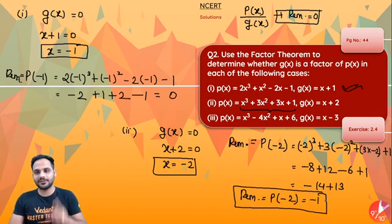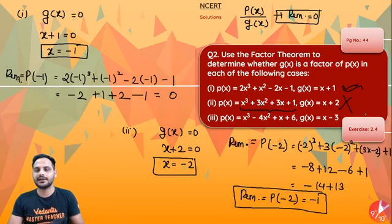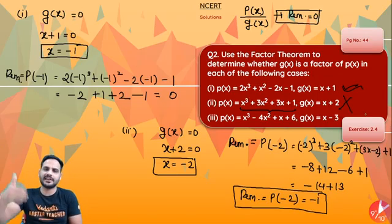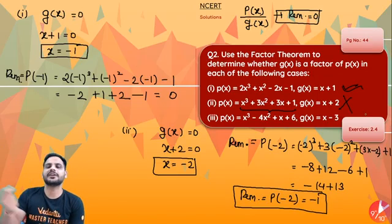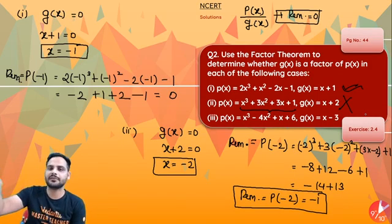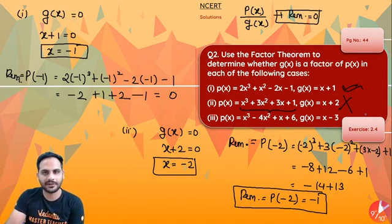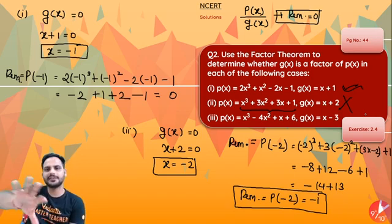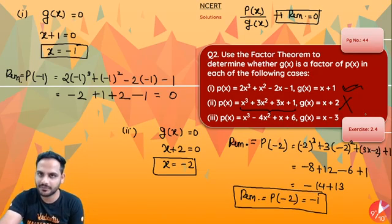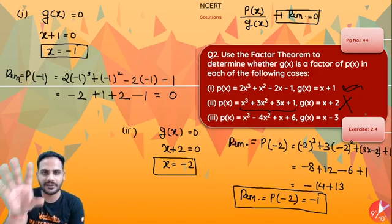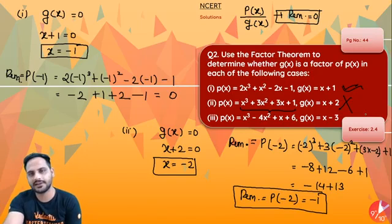Since the remainder is not equal to 0, g(x) = x + 2 is not a factor of p(x) in the second case. To summarize: using the Remainder Theorem, if the remainder is 0, it is a factor; if the remainder is not 0, it is not a factor. Factor Theorem is simply a special case of the Remainder Theorem.